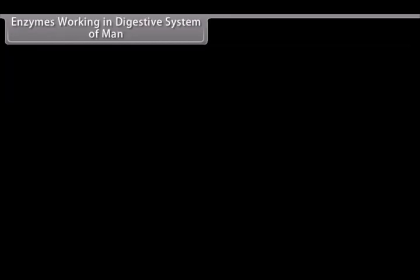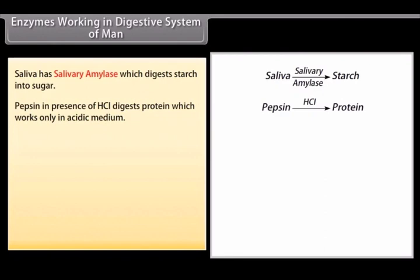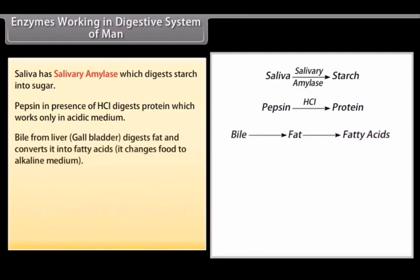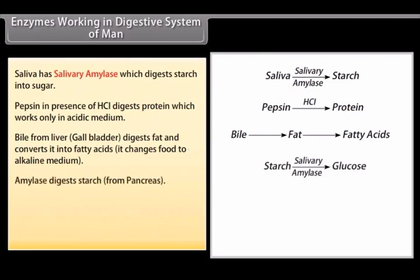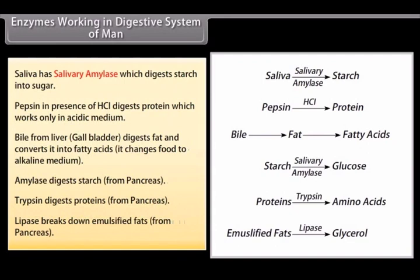Saliva has salivary amylase which digests starch into sugar. Pepsin in the presence of HCl digests protein and works only in acidic medium. Bile from the liver and gallbladder digests fat and converts it into fatty acids, and changes the food medium to alkaline. Amylase from the pancreas digests starch, trypsin from the pancreas digests proteins, and lipase from the pancreas breaks down emulsified fats.